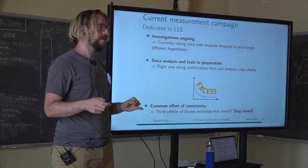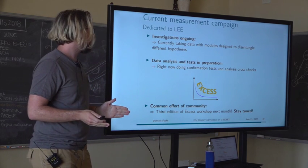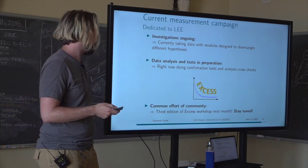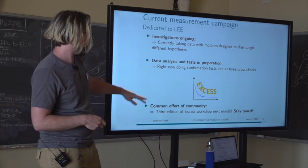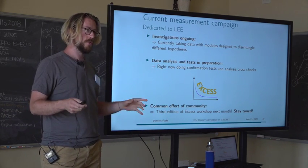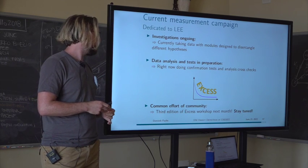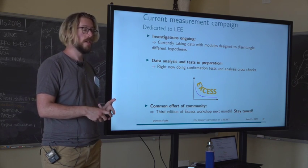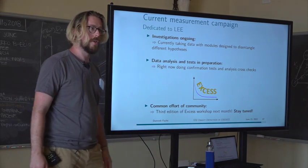To disentangle the excess, we run measurements with different configurations: different materials with different hardness and properties, modules with and without the scintillating foil, different holding materials and detector geometries. The current measurement is fully dedicated to understanding the low energy excess. This is also a community-wide effort — not only CRESST sees something like this, and there's a community workshop where experiments share results and ideas. The third edition of this workshop is next month, where I'll present new results from the current run.